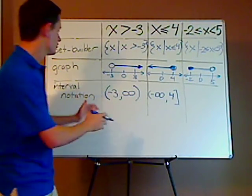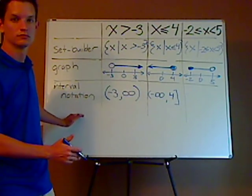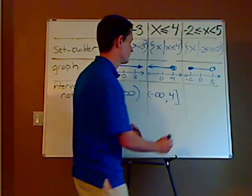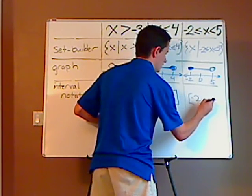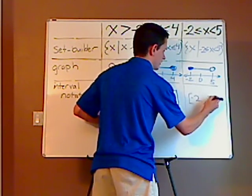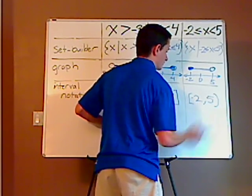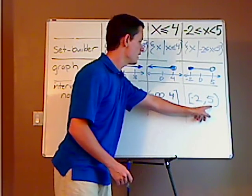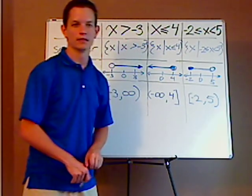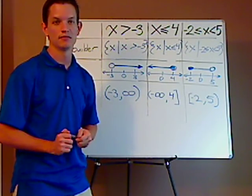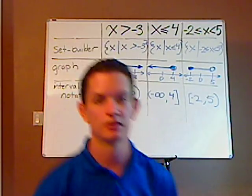And then that shows you how to do interval notation. It's going to include the negative two, it's going to start at negative two, and it's going to go up to five, and it's not going to include the five. So on the five, there's a parenthesis, and then on the negative two, there's a bracket because it's included. And that's pretty much it.